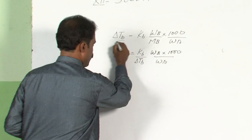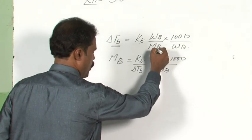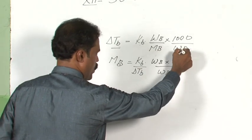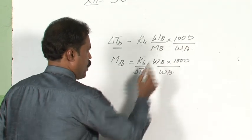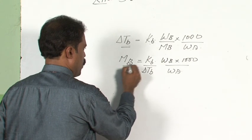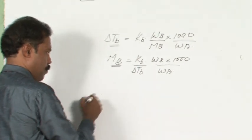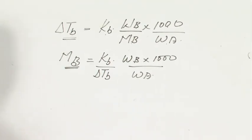We have seen that delta Tb = Kb × (Wb / Mb) × (1000 / Wa). Using this, we can find out the molecular weight of a substance.